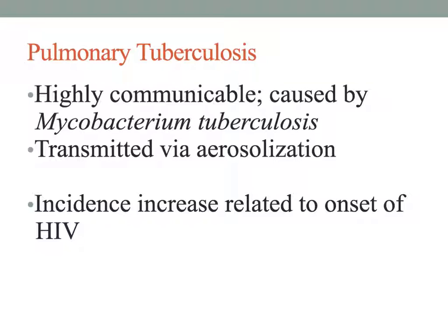Moving on to another infectious disease of the pulmonary system—pulmonary tuberculosis is an acute or chronic infection characterized by pulmonary infiltrates and formation of granulomas with casation, fibrosis, and cavitations. The American Lung Association estimates that active TB afflicts nearly 5 out of every 100,000 people. Prognosis is excellent with correct treatment, and Mycobacterium tuberculosis is the major causative organism.